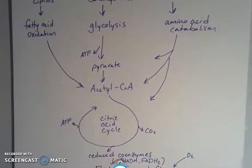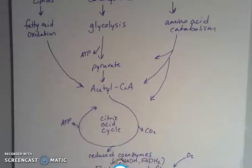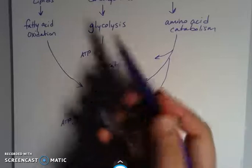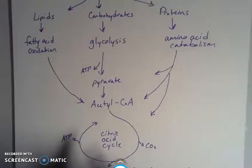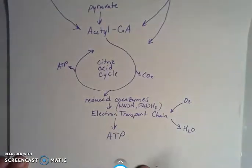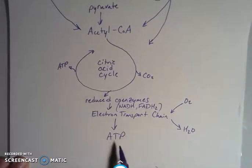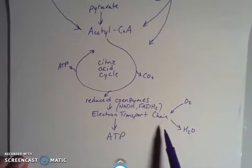Acetyl-CoA is our first product that becomes a reactant — it reacts with oxaloacetate, and those things react together to form citrate, and then we get to move along the cycle. The cycle then feeds into the electron transport chain, and we ultimately end up with ATP at the end. That's kind of the end game — where does our energy come from? It comes from the production of ATP, which comes from these reduced coenzymes that go through the electron transport chain.